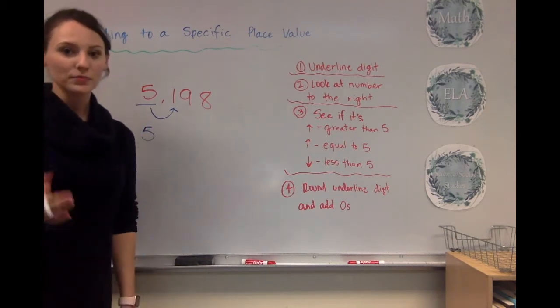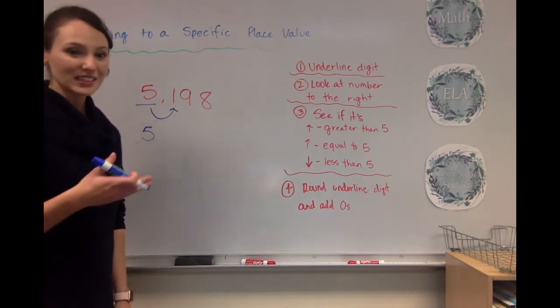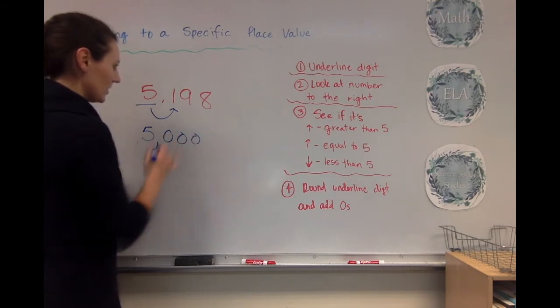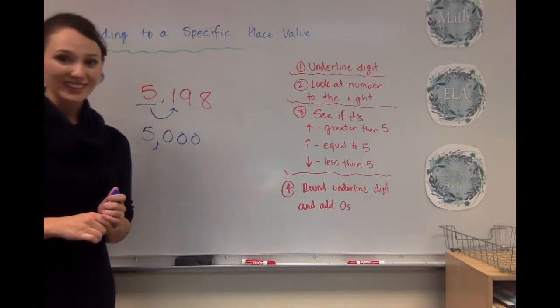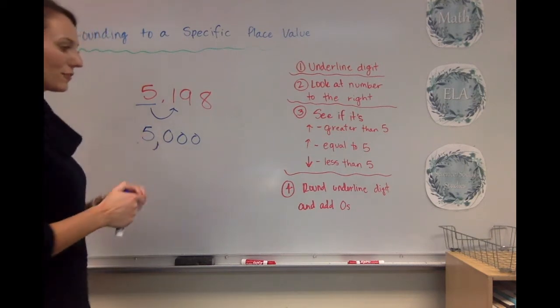Okay, I'm not rounding it up. I'm just keeping it the same. The rest of these numbers, when I'm rounding down, are going to be zeros. So 5,198 rounded to the thousands place is 5,000.